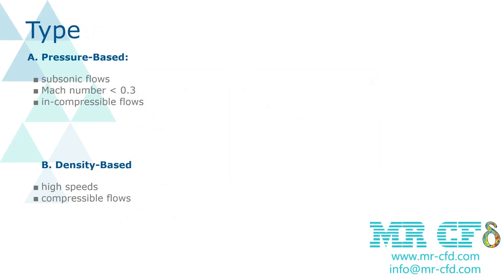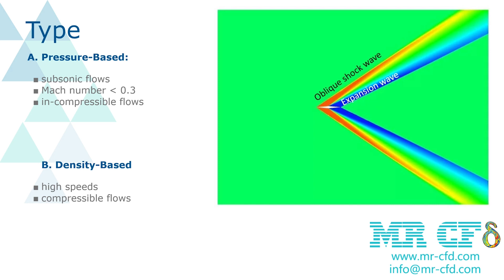Pressure-based and density-based solvers are two main methods of solving the flow field. The pressure-based solver is used for subsonic or low-speed flows with Mach number below 0.3 and incompressible flows, while the density-based solver is used for high speeds and compressible flows. Although both can be used for high Mach numbers, the density-based solver gives more accurate answers and can even show shock wave resolutions.